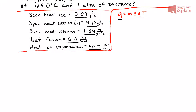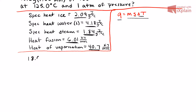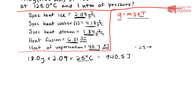Starting Step 1: we take 18 grams times 2.09 — the specific heat of ice — times a change in temperature of 25°C, since we're going from negative 25 to 0 degrees Celsius. This equals 940.5 joules.